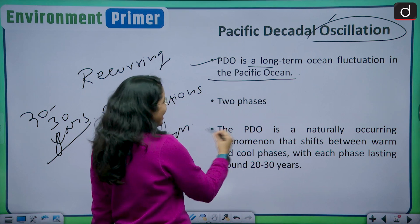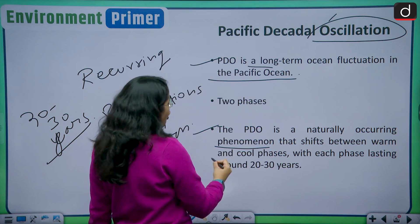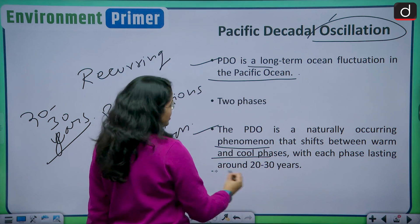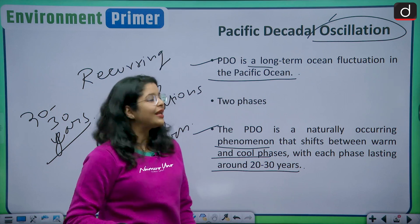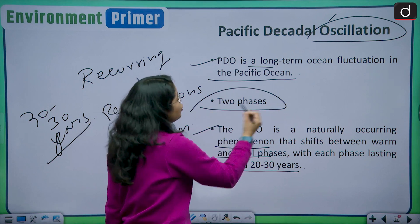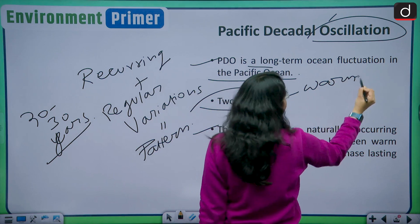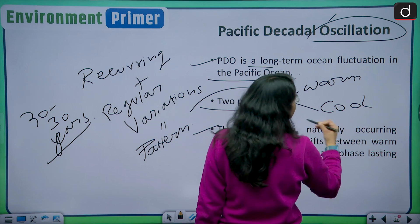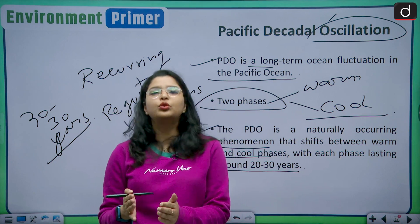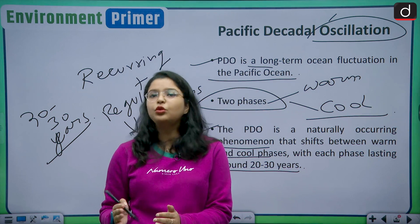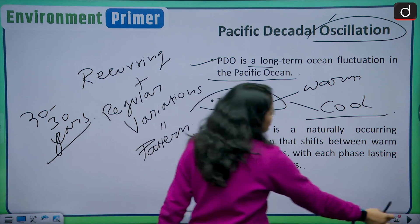PDO is a long-term ocean fluctuation in the Pacific Ocean. It is a naturally occurring phenomenon that shifts between warm and cool phases, with each phase lasting around 20 to 30 years. So the PDO has two phases: a warm phase and a cool phase, each lasting around 20 to 30 years.